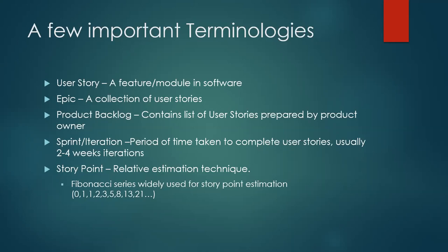Epic is a collection of user stories, and the product backlog contains all the user stories to deliver Sprint on Sprint. Sprint and iteration — which I already spoke about — is the fixed period of time where you are going to deliver a working increment. Last but not least, story points. Story point is the most commonly used estimation technique in a Scrum or Agile environment — it's a relative estimation technique. For story points, we usually use the Fibonacci series: 0, 1, 1, 2, 3, 5, 8, and so on.